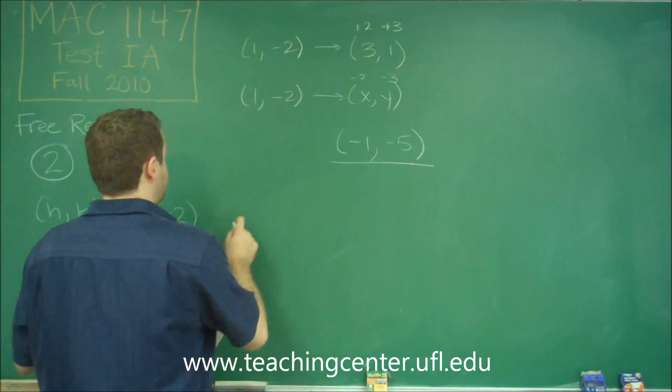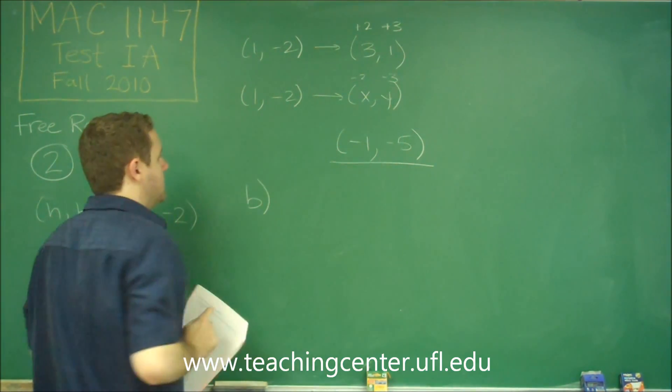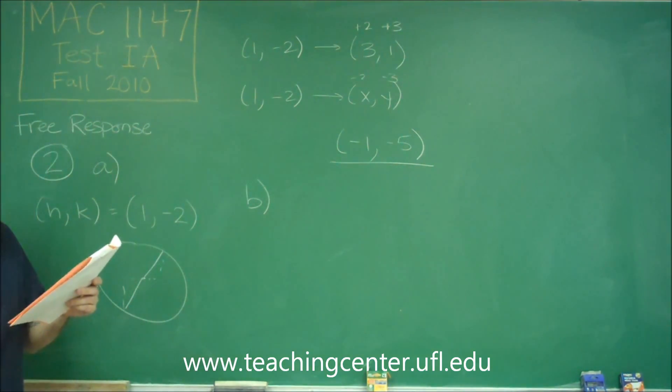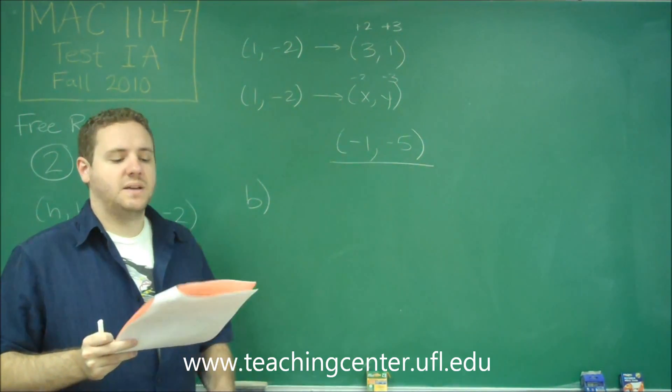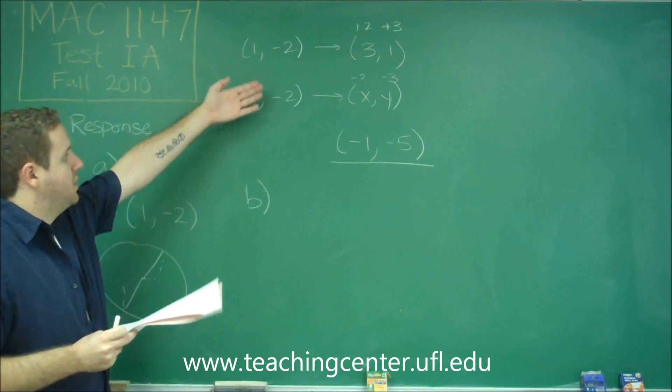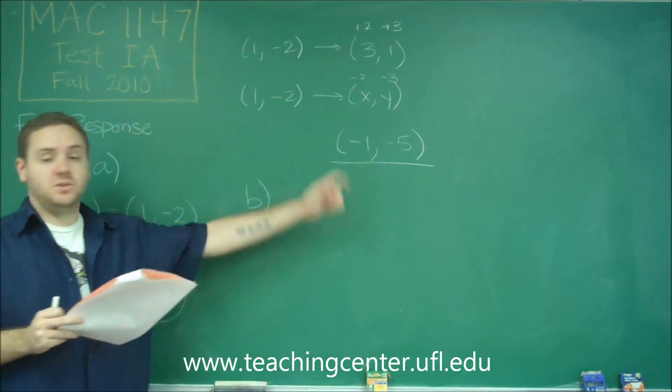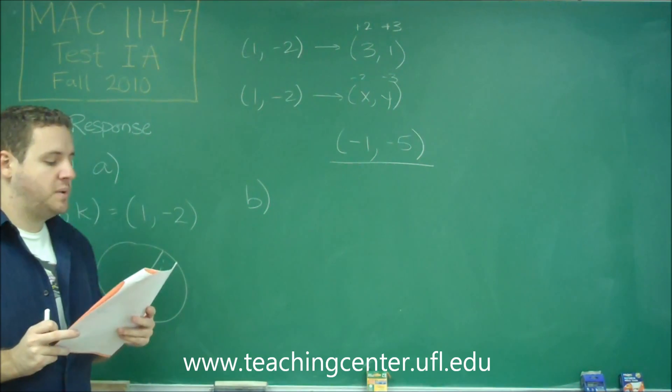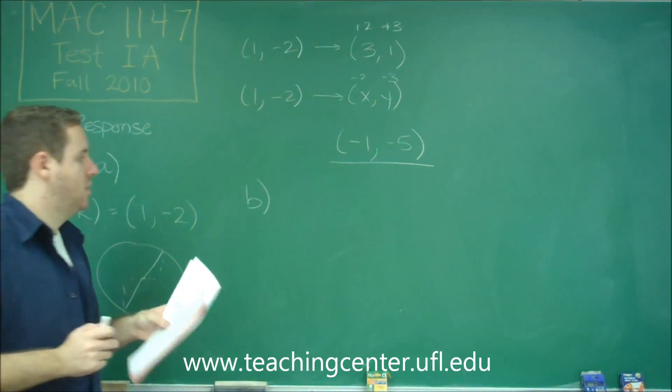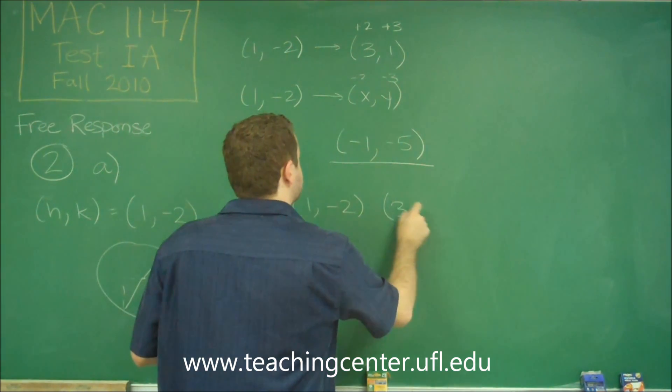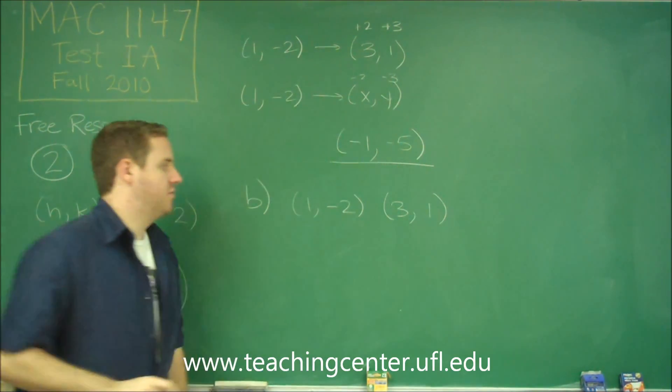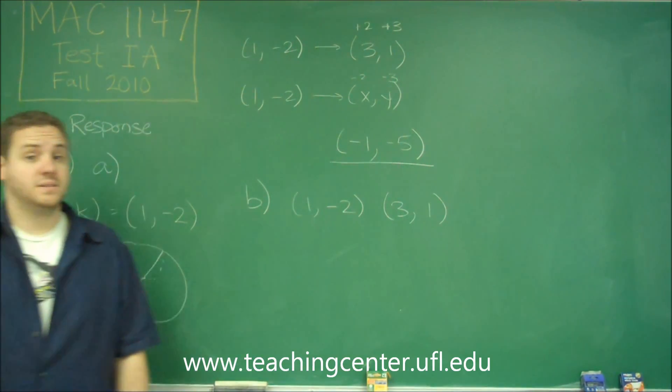So letter B says we need to find the radius. The radius of the circle is the distance from the center to the edge. And we already know that one of the points on the edge is (3,-1), or you could use (-1,-5). So all we need to do is the distance formula between (1,-2) and (3,-1), for example, we would have our radius then.